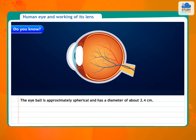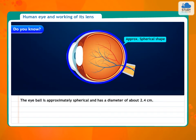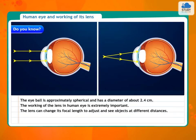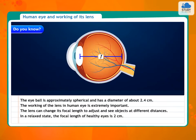Do you know? The eyeball is approximately spherical and has a diameter of about 2.4 cm. The working of the lens in the human eye is extremely important. The lens can change its focal length to adjust and see objects at different distances. In a relaxed state, the focal length of healthy eyes is 2 cm. The other focus of the eye is on the retina.